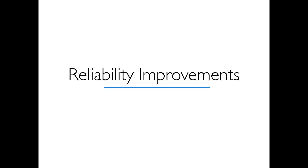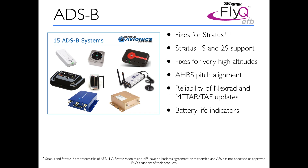Reliability improvements. Nothing is more important when you're flying than making sure everything works properly. We made a lot of changes for ADS-B — FlyQ EFB supports at least 15 different ADS-B receivers. We fixed a bug with the Stratus 1 receiver, ensured the Stratus 1S and 2S were properly supported, and fixed a problem showing incorrect altitude when flying over 30,000 feet with some devices. We also corrected the AHRS alignment on pitch so the zero point matches the horizon line on the ground, and increased the reliability of NexRad and METAR/TAF updates. For most ADS-B receivers with a battery, we now show the battery life indicator in the status window.